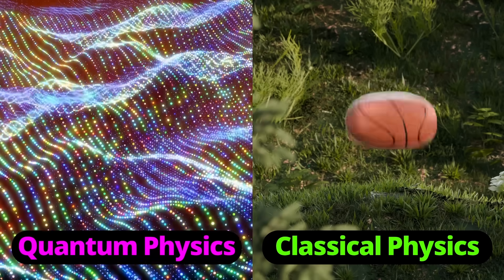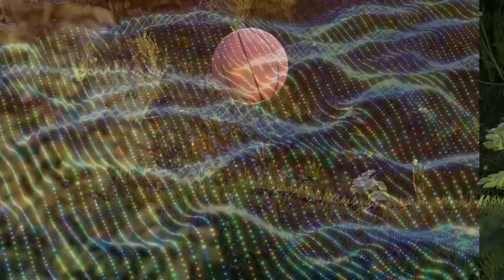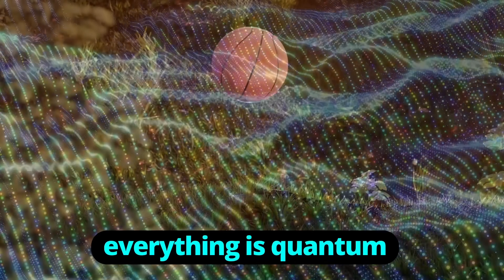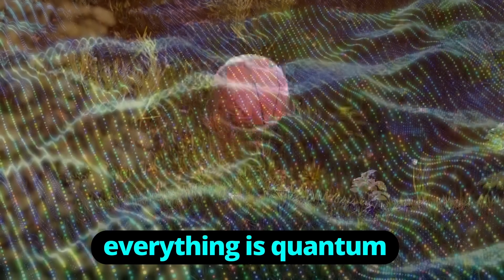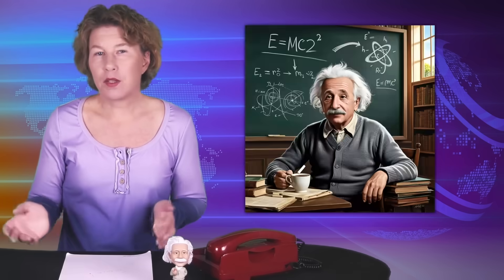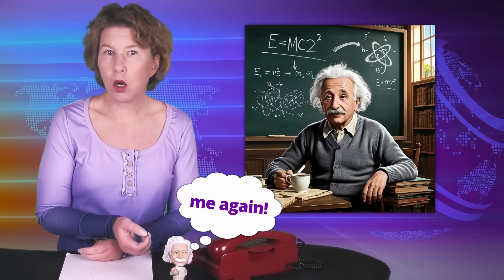However, most physicists today think that there aren't really two separate regimes of physics, one quantum and one classical. Really, everything is quantum. It's just that for large objects that we encounter in daily life, the quantum effects become so small and subtle that we can't see them. It's much like we don't see the effects of Einstein's relativity. Not because they're not there, they're just too small.